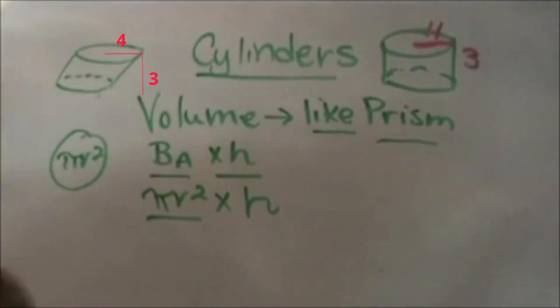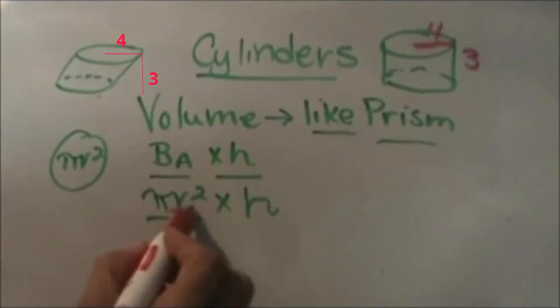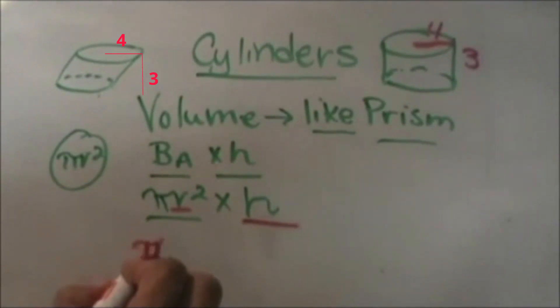What would be the volume? You just plug into your formula with r being 4 and h being 3. So π times 4² times 3.